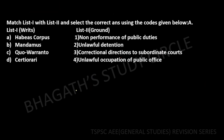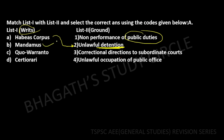Next question on writs: Habeas corpus deals with unlawful detention. Mandamus deals with non-performance of public duties — it is a command to perform. Certiorari is a corrective direction to subordinate courts. Quo warranto deals with unlawful acquisition of a public office.